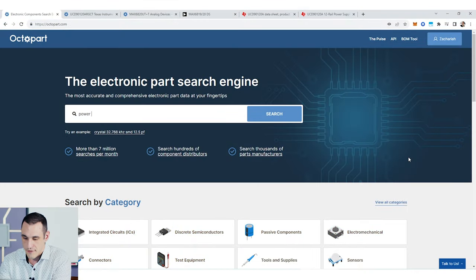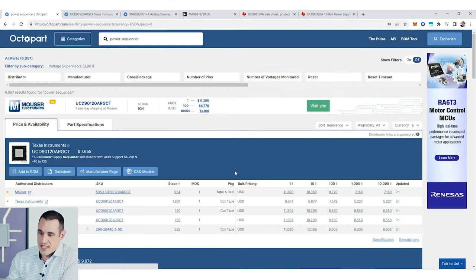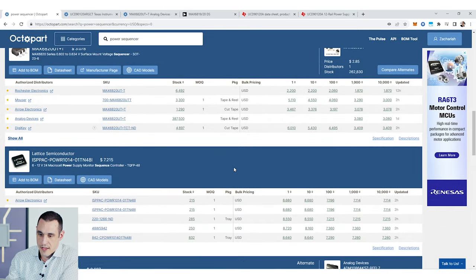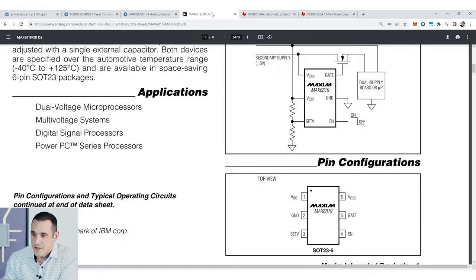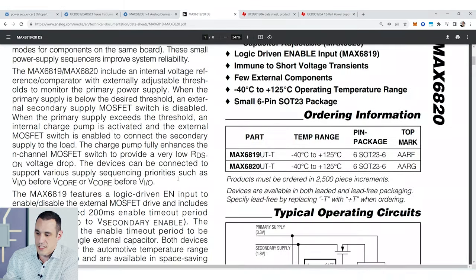Let's hop on to Octopart and take a look at some different types of power sequencer ICs. So I'm on Octopart now and if I just search for power sequencer we're going to see a whole lot of results here from different manufacturers. I'm just going to jump into this Maxim or now Analog Devices component. This is really a simple power sequencer. Basically what this power sequencer is doing is it's going to turn on one of the rails after a different rail turns on, and power sequencers can do this in a number of ways.